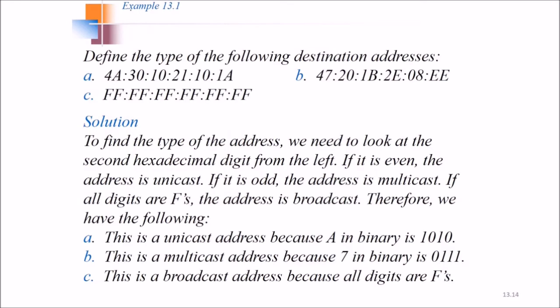Now let us see, define the type of the following destination addresses. There are various types of destination address. So how to find out the type of address? For this, we need to look at the second hexadecimal digit from the left. If it is even, the address is unicast. If it is odd, the address is multicast. And if all the digits are Fs, the address is broadcast.